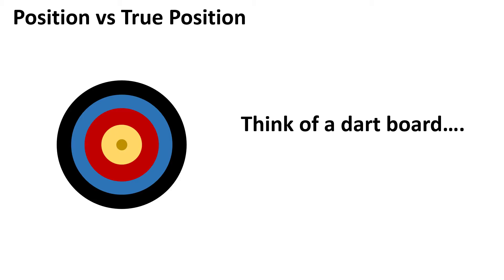Hey everybody, it's Jason again with Engineer Essentials. Today we're going to be talking about position and true position — more specifically, the differences between the two. They're kind of two chapters of the same story. A lot of people call this symbol 'true position,' when in fact ASME Y14.5 calls it just 'position.' True position is just a part of the position control as a whole, and we'll get into that a little bit here.